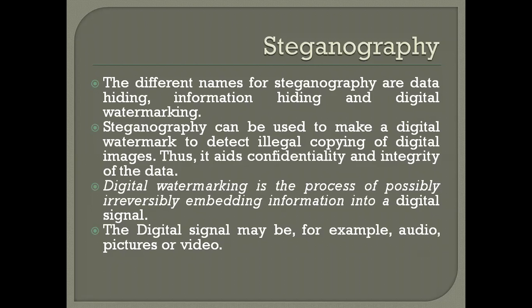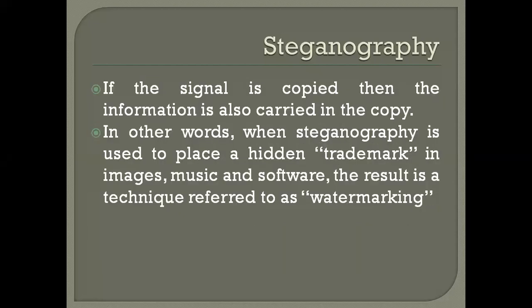For example, similar to how we check a digital signature, we can confirm whether it is an original file or a duplicate one. Digital watermarking is the process of possibly irreversibly embedding information into a digital signal — which may be audio, picture, or video. Everything we listen to or view on a computer is converted and transmitted in digital format. If the signal is copied, the information is also carried in the copy.